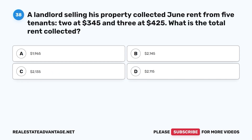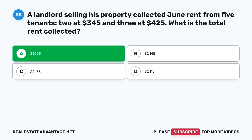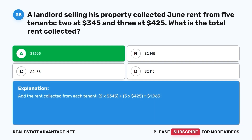Question 38. A landlord selling his property collected June rent from five tenants — two at $345 and three at $425. What is the total rent collected? A. $1,965. B. $2,145. C. $2,135. D. $2,115. The correct answer is A. $1,965. Add the rent collected from each tenant: 2 × $345 + 3 × $425 = $690 + $1,275 = $1,965.